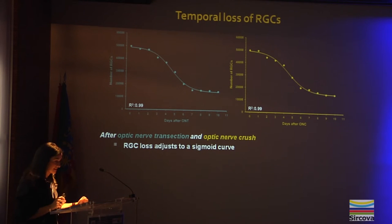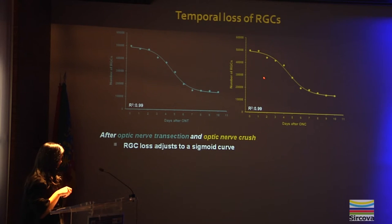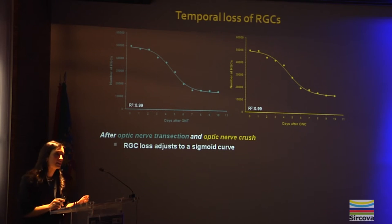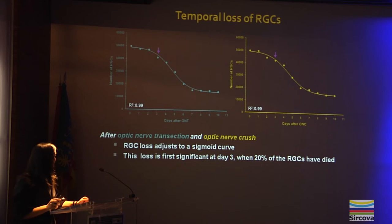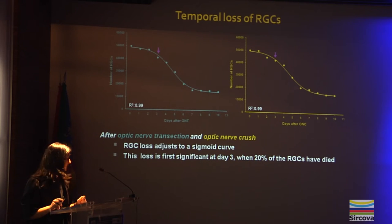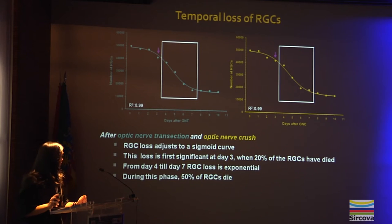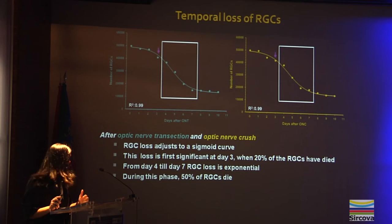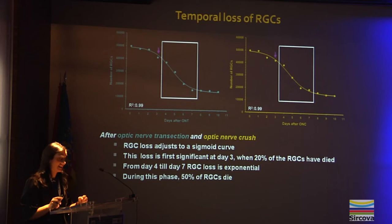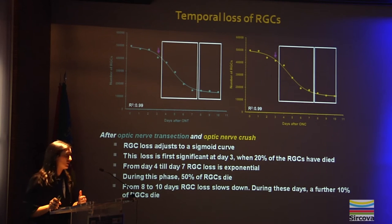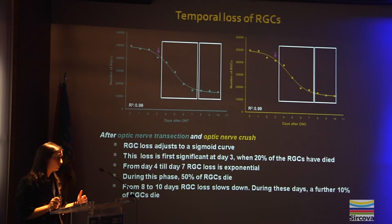In this graph, the number of ganglion cells is represented at different time points post optic nerve transection and optic nerve crush. After both lesions, retinal ganglion cell loss follows a sigmoidal curve. This loss is very significant at day 3, when 20% of ganglion cells have died. From day 4 to day 7, ganglion cell loss is exponential — during this phase, 50% of ganglion cells die. From 8 to 10 days, ganglion cell loss slows down, with a further 10% of ganglion cells dying.